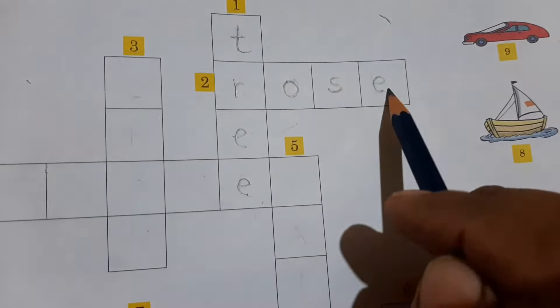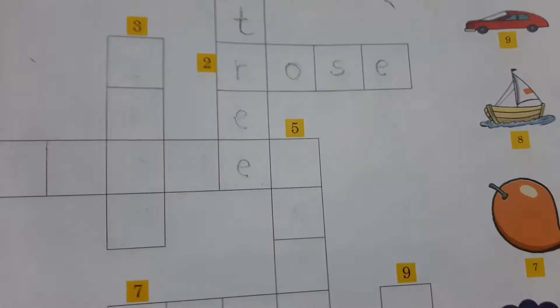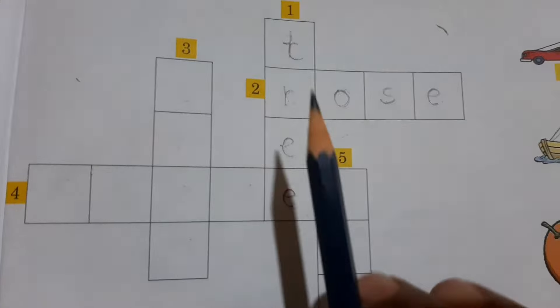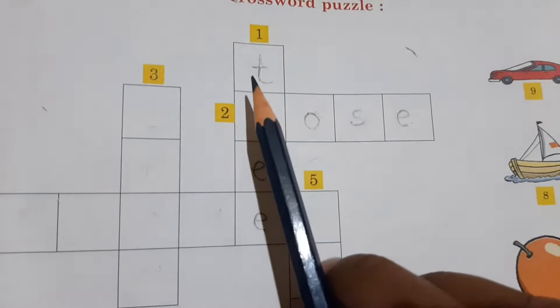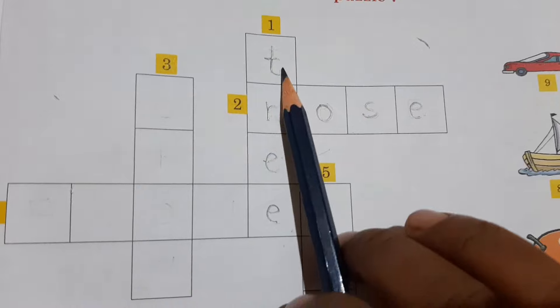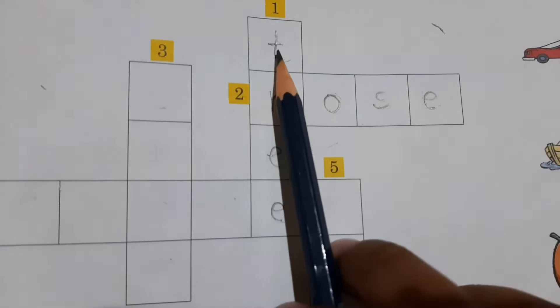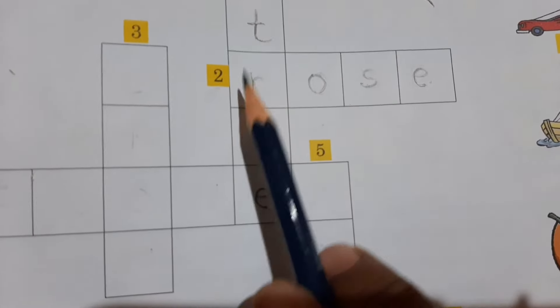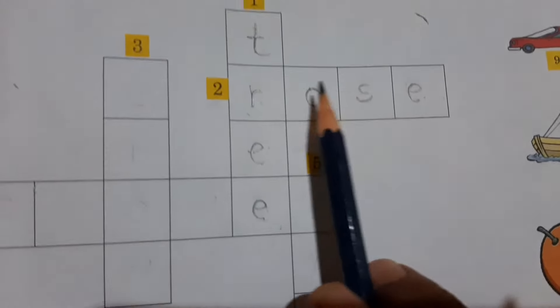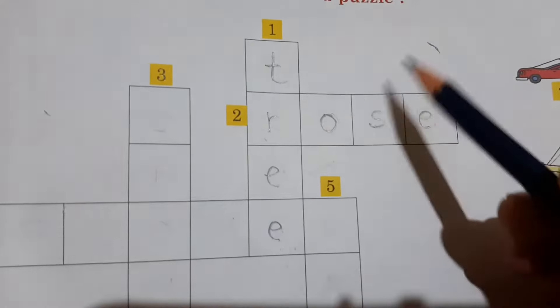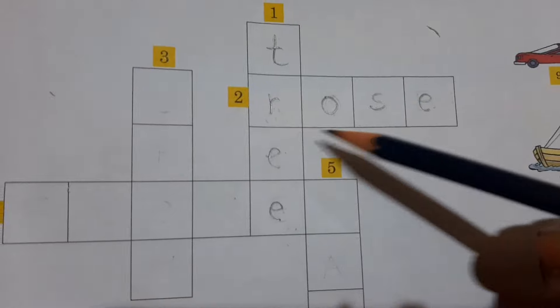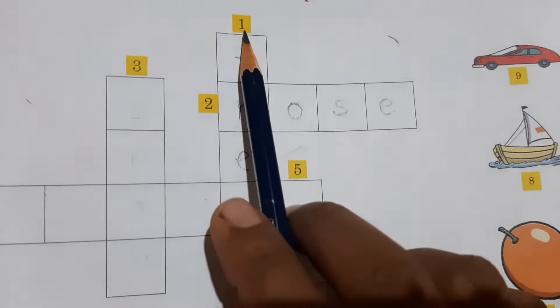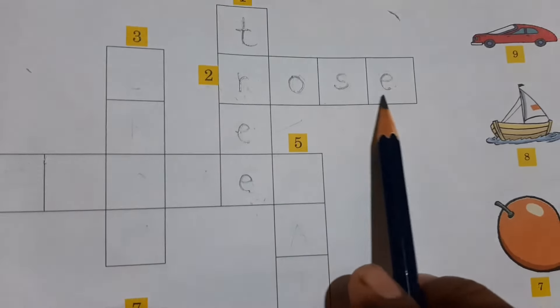So dear students, one letter in this puzzle is related to another. The words are related with each other. So here, T-R-E-E tree and R-O-S-E rose.